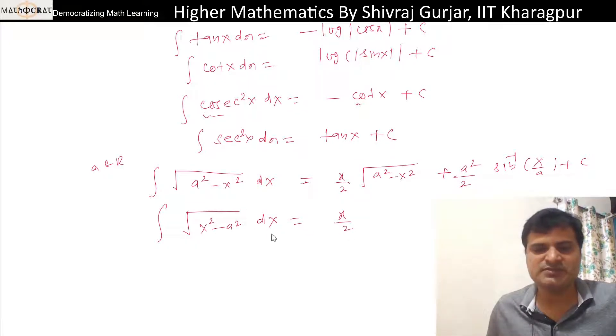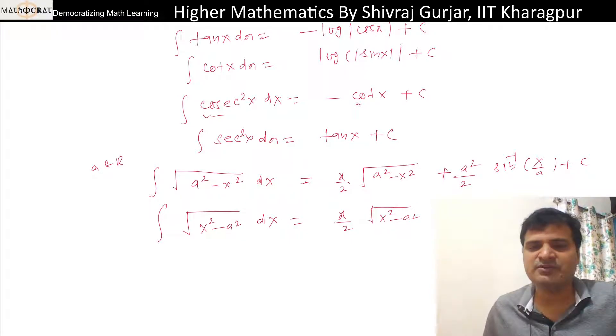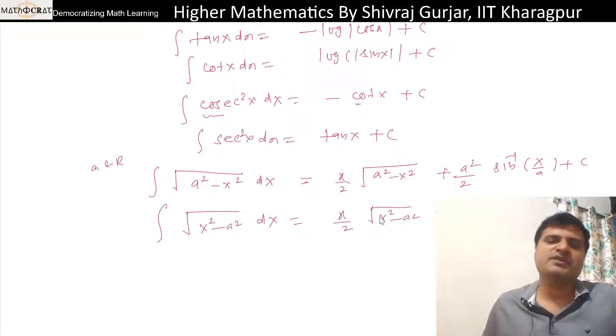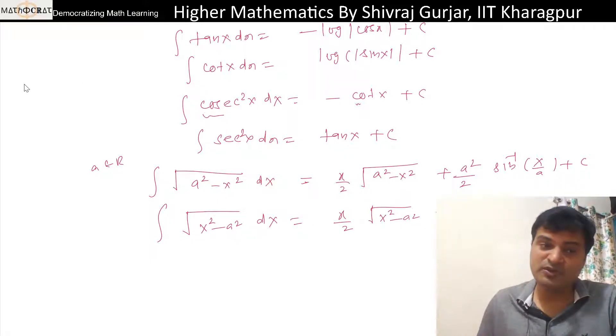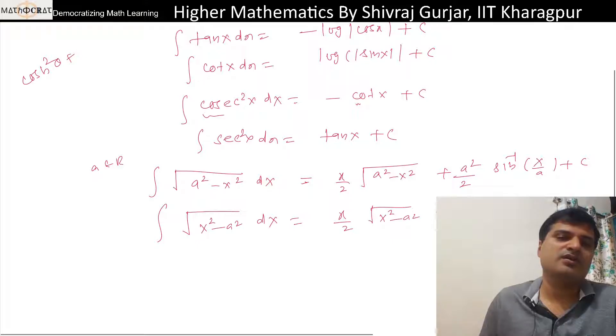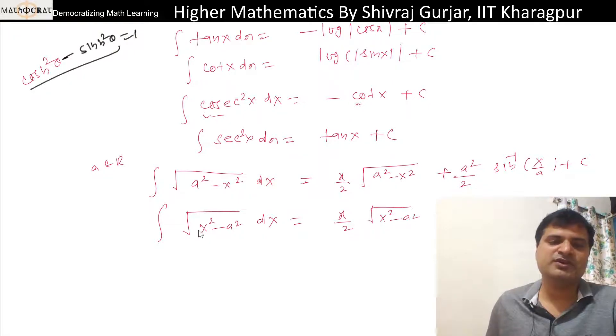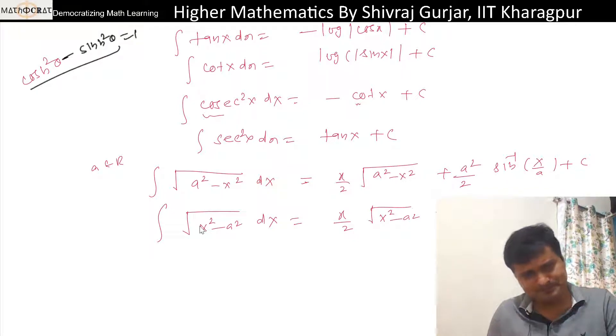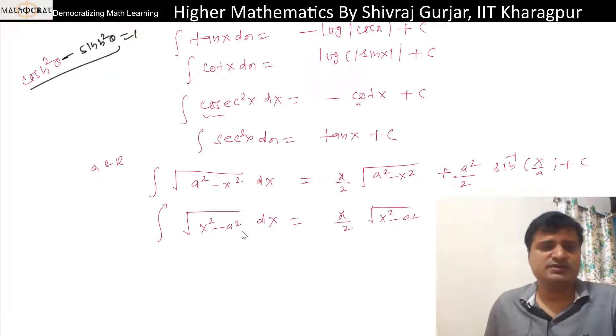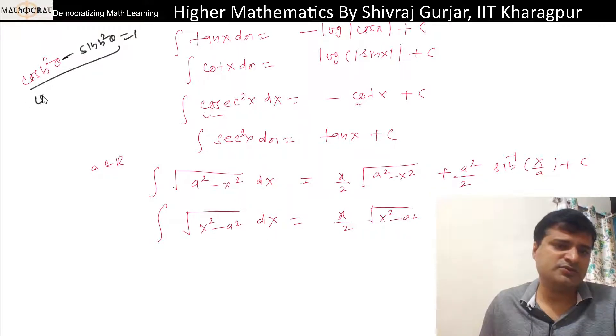For integral of root x square minus a square dx, we can use hyperbolic functions. We must be knowing sinh squared theta plus cosh squared theta... no, minus. Cosh squared theta minus sinh squared theta equals to one. If we put x equals a cosh theta, then cosh squared theta minus one is nothing but sinh squared theta.